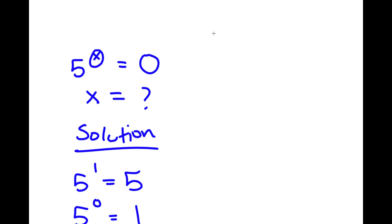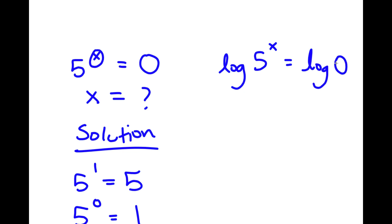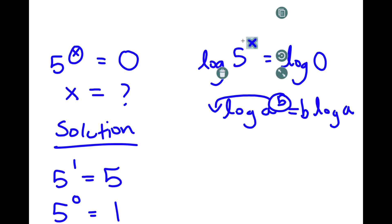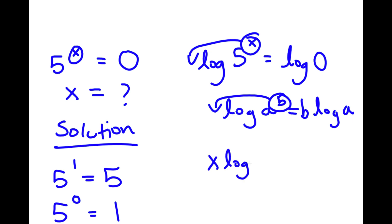The first step I'm going to do is take the log on both sides. So I have log of 5 to the power of x is equal to log of 0. Now, if I have something in the form log of a to the power of b, I can move the exponent to the front — so this equals b times log a. So I can move x to the front, giving me x times log 5 is equal to log 0.